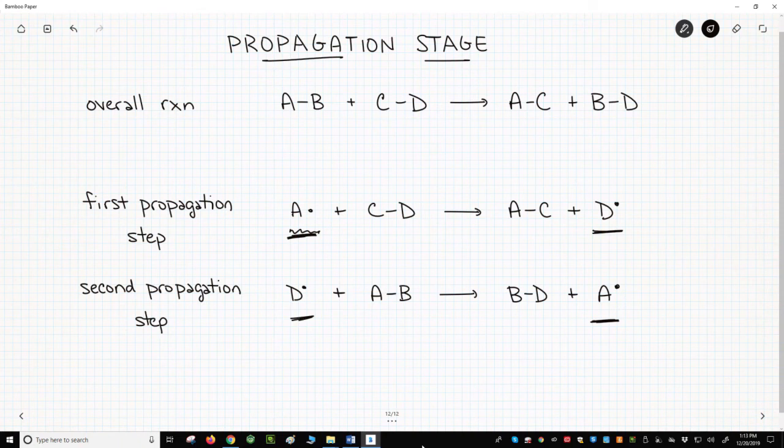This is a mock reaction, but we can still write some mechanisms. In the first step, to get to the product, we need to form a new A-C bond and break a C-D bond. In a radical reaction, we use fish-hook arrows. And here is the mechanism for this reaction.